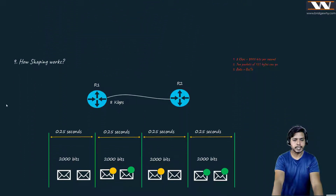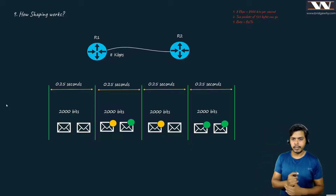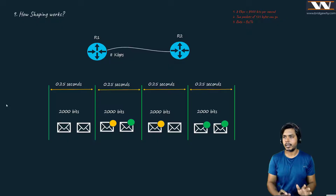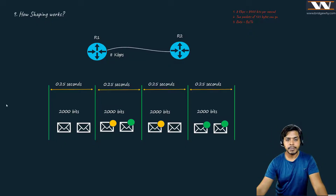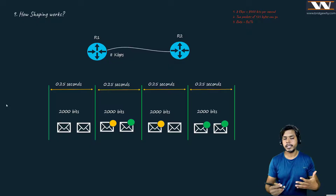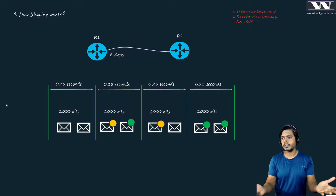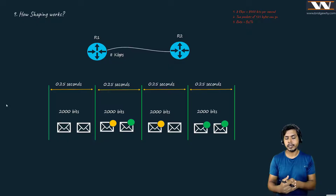Let's try to understand how exactly shaping is going to work. This will take about 10 more minutes. Believe me, it is very simple — just third or fifth grade mathematics. I am taking an example using very low speeds. If you want to go with 1 gigabit, 10 gigabits, or 1 terabit, you can just add zeros, but I'm using small numbers to keep it simple.